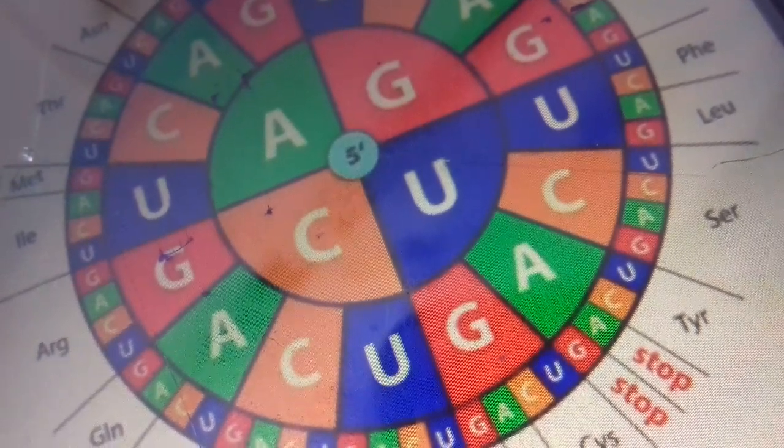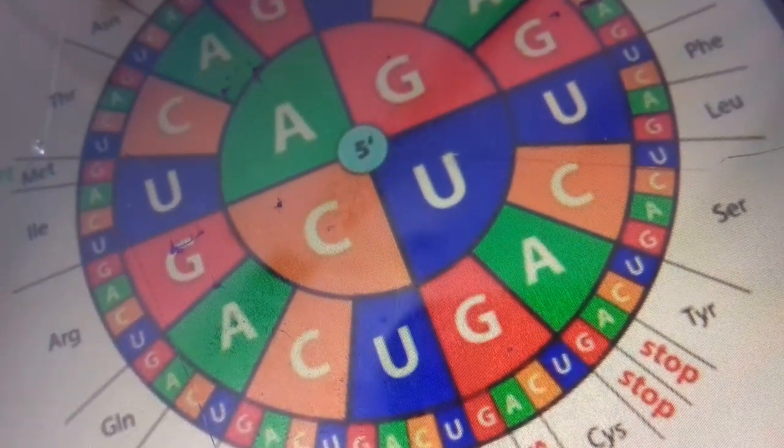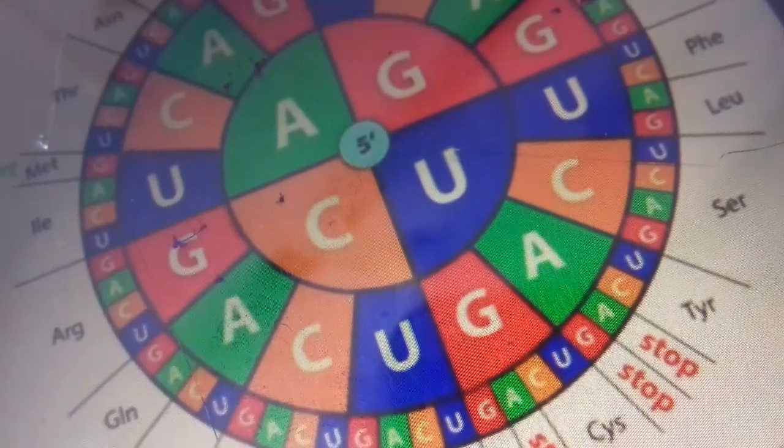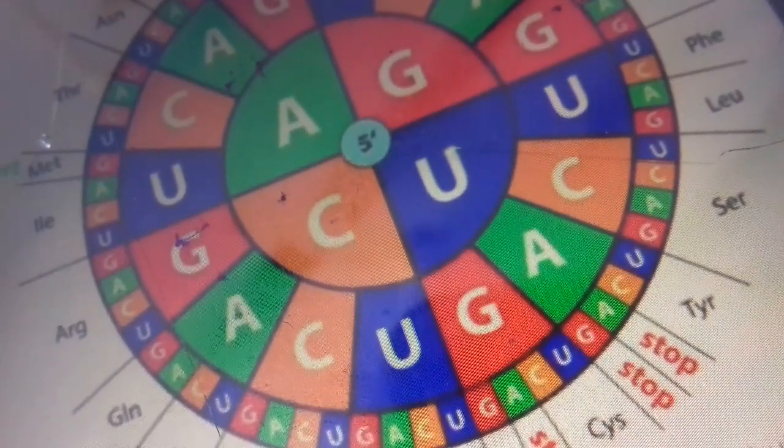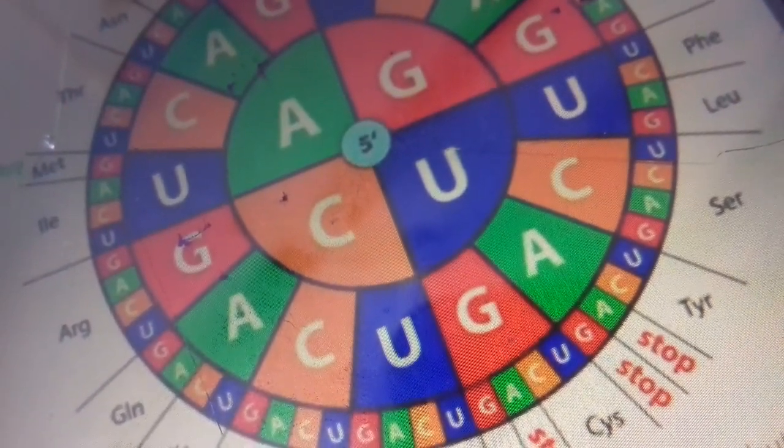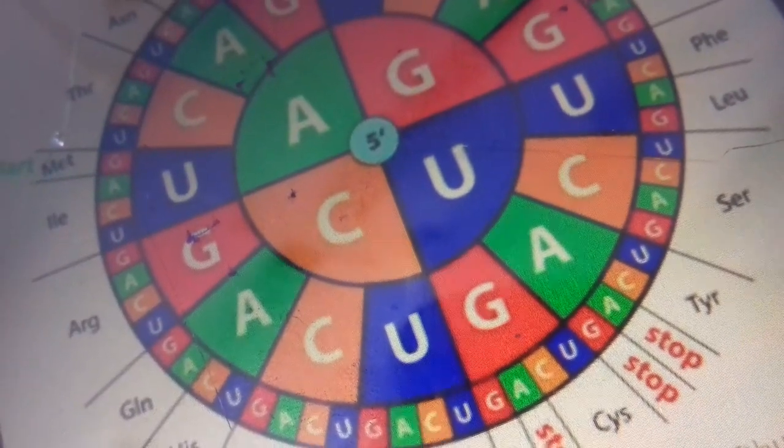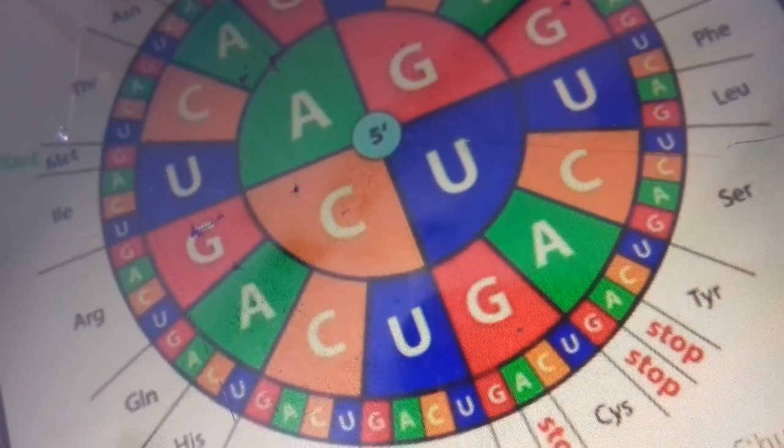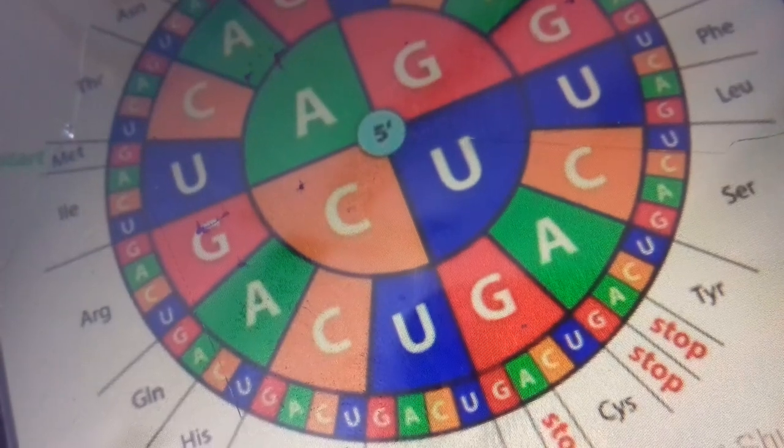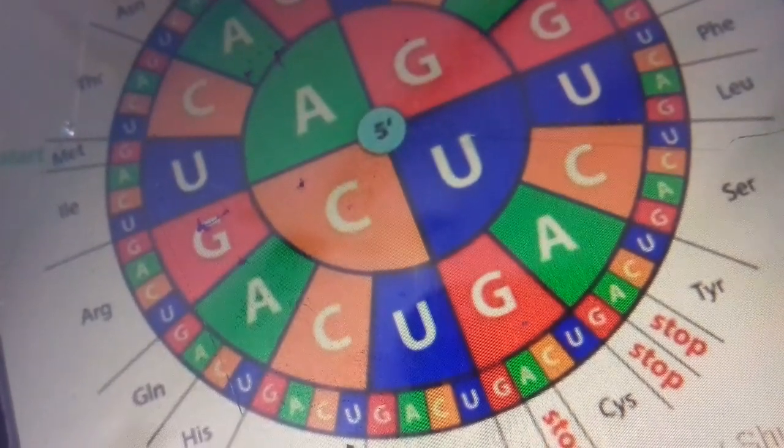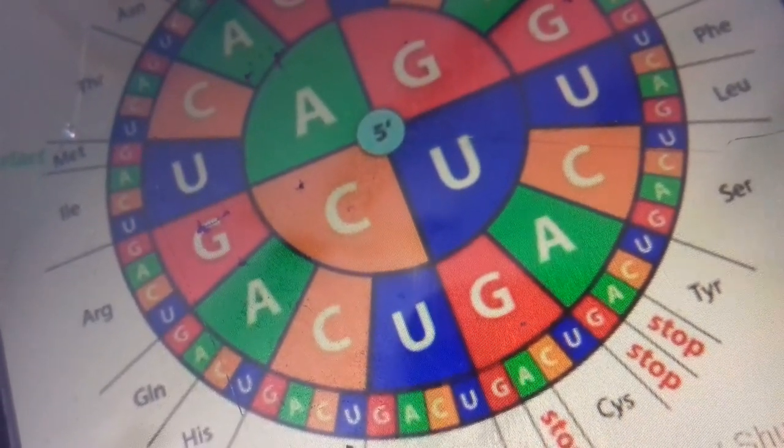Today we will learn about genetic code. Genetic code tells us about the instruction contained in a gene that tells a cell how to make a specific protein. It predicts the amino acid sequence.